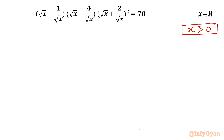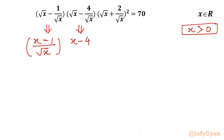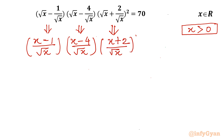Now let us consider the LCM. The first bracket is (x minus 1) over root x, the second bracket is (x minus 4) over root x, and the third bracket is (x plus 2) over root x, whole square. So the full expression equals 70.